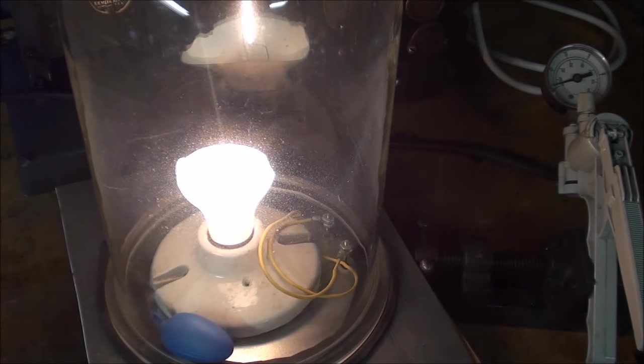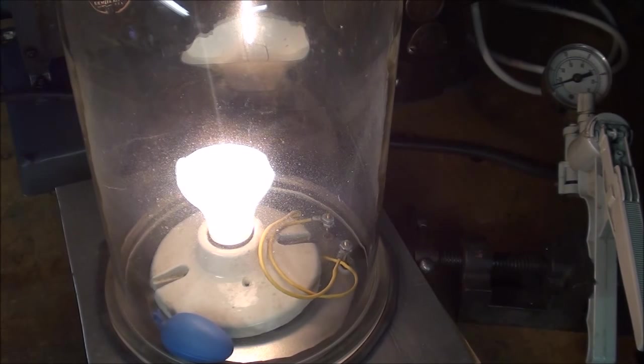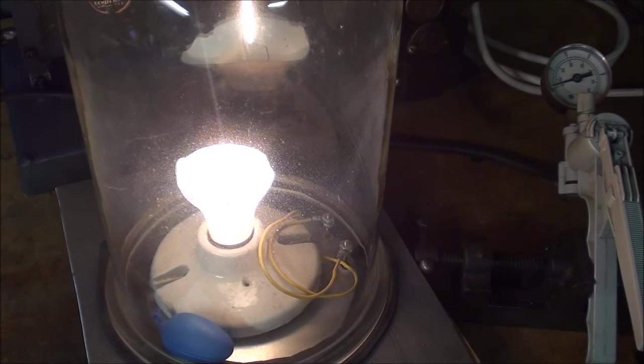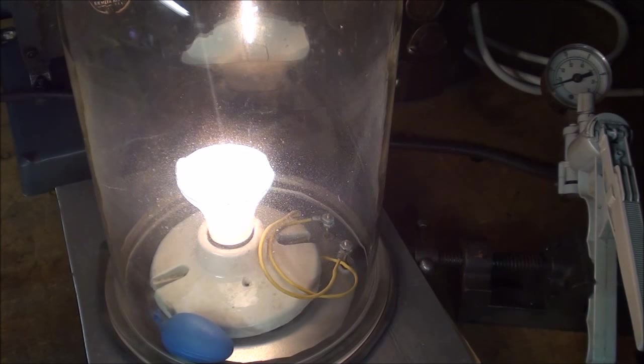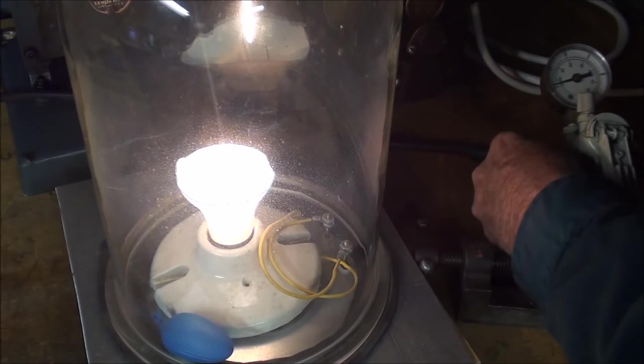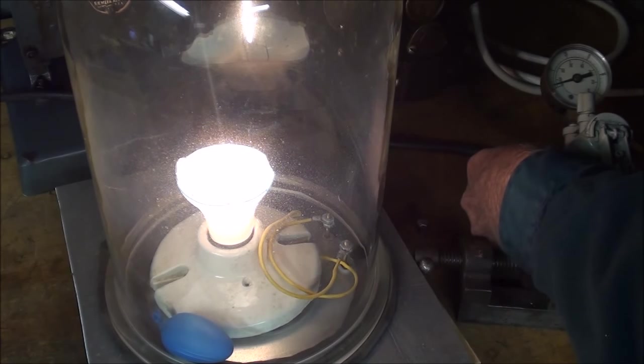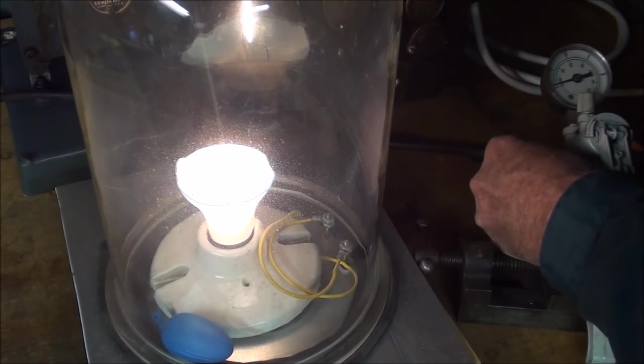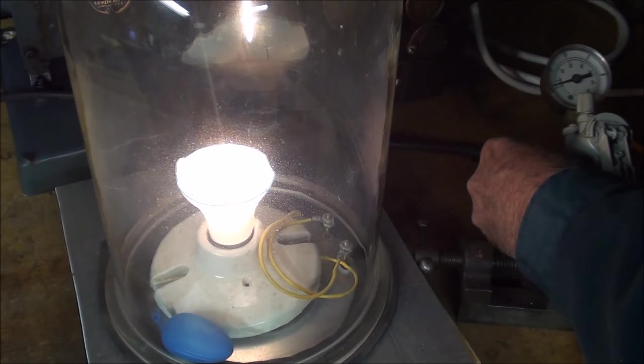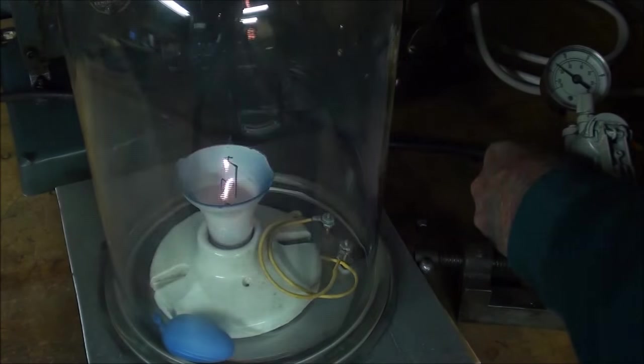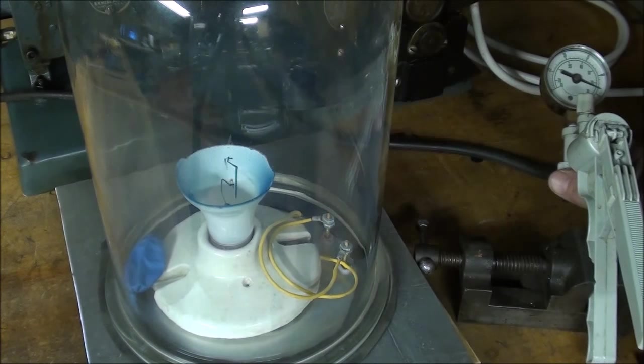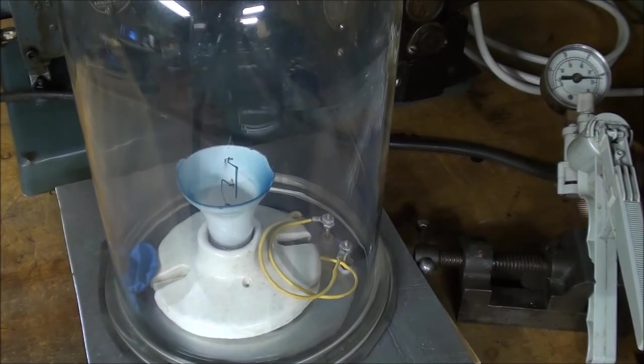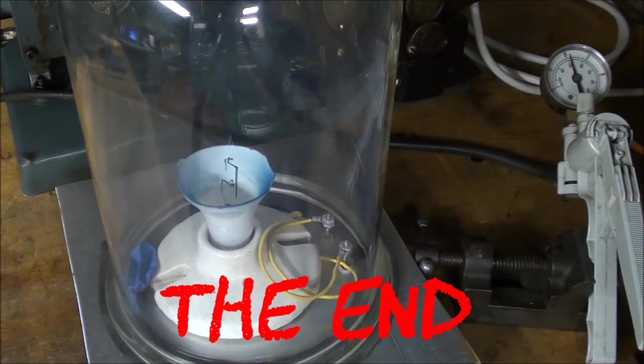I'm going to turn the pump off now. I think it holds pretty well. And at this point that's pretty bright. I'm going to turn the valve and let the air back into the jar. If I can find the valve here. Here we go. And that quickly she burnt out. And that concludes the video on the incandescent light bulb and what makes it work.